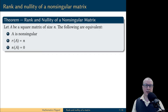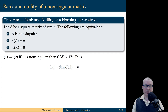First, let's establish that statement 1 implies statement 2. So we are assuming that A is a non-singular matrix. Then we know that the column space of A is equal to C^N. In particular, we can compute the dimension of the column space. This is the dimension of the vector space C^N, column vectors of size N.